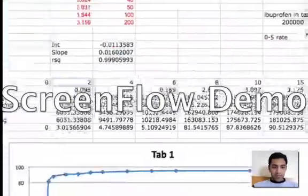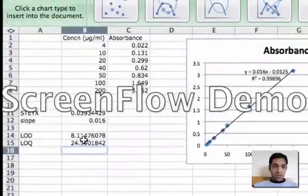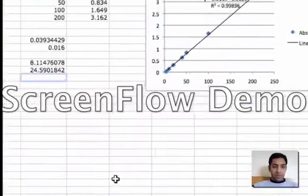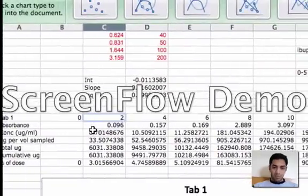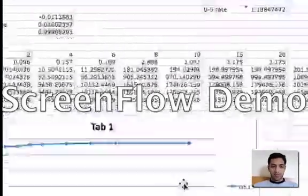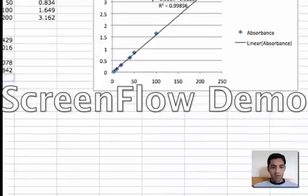3.01 is well below the detection limit that is 8.11 microgram per mL, so actually you're supposed to be making it to zero, but I haven't made it to zero. And the limit of quantitation that we have got is 24.59.